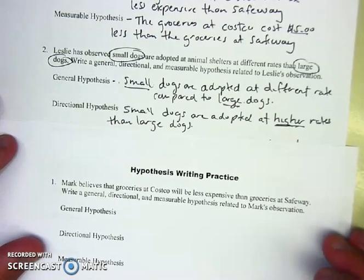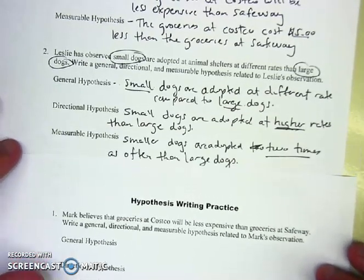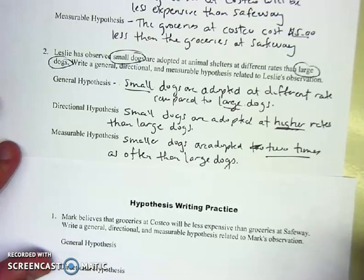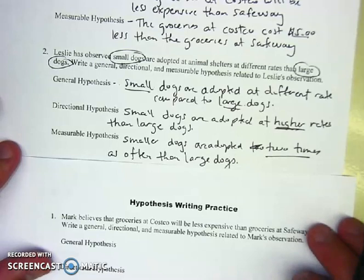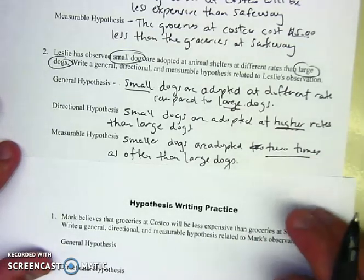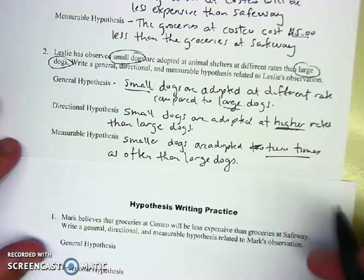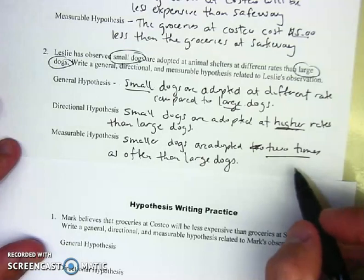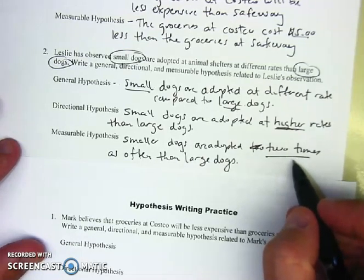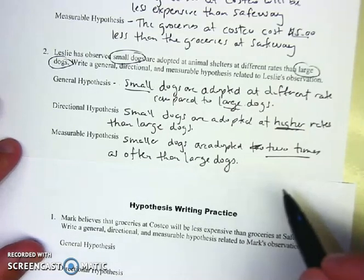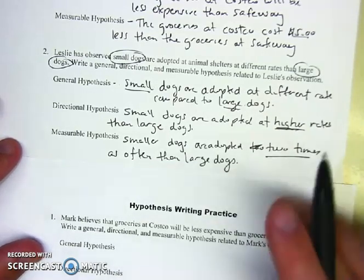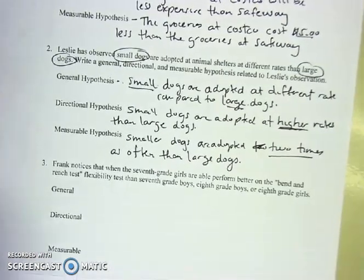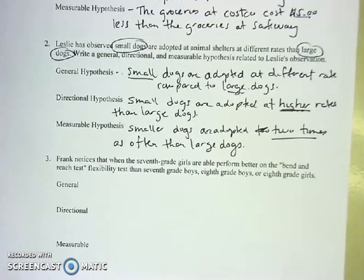From here, think of something you can measure. Maybe you measure how many times more — for every two small dogs adopted, one large dog is adopted. There are many different ways to word your measurable hypothesis, so do something that works for you. Here are three examples of the hypothesis for number two. I'm not going to do the third version — I'd like you to do it from start to finish. If you have any questions or want me to check it over, show me and I'll give you my critique.